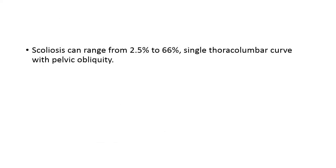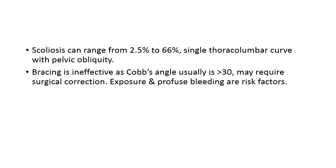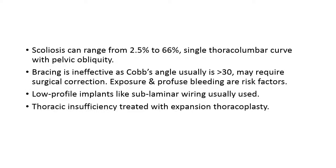Scoliosis is seen in 2.5 to 66% of cases, presenting as a single C-shaped thoracolumbar curve with pelvic obliquity. Bracing is not very useful as the Cobb angle is usually more than 30 degrees. Surgical correction is required with low-profile implants like sublaminar wires. Since all muscles are fibrotic, exposure is long, time-consuming and profusely bleeding. Bone mineral density is also compromised, making bleeding a very significant risk factor in scoliosis correction surgery. Thoracic insufficiency due to fibrosis or contracture must be treated with expansion thoracoplasty.